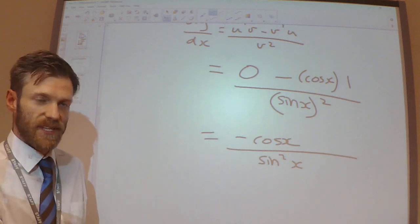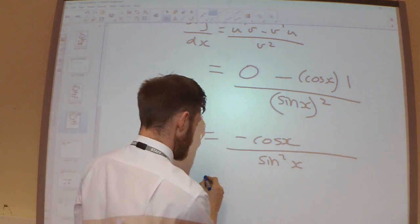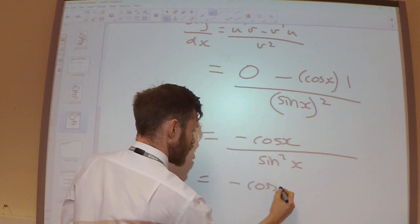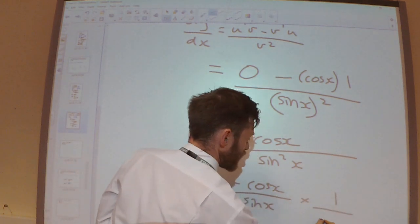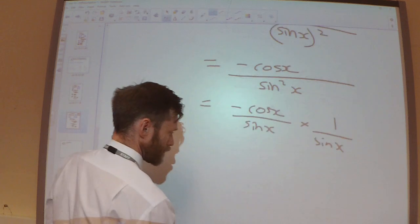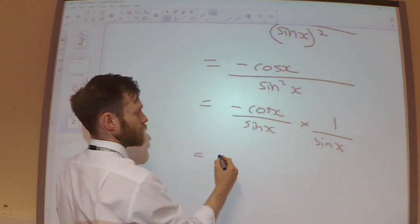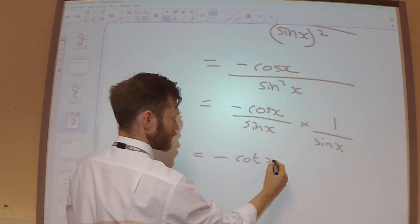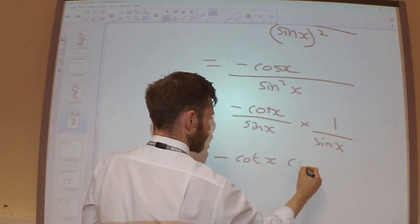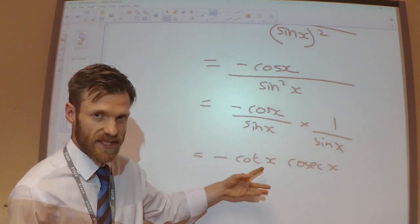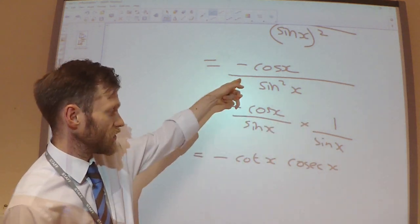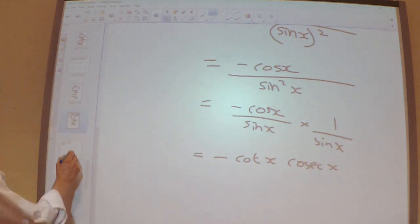And just like we did a moment ago, I could rewrite this as minus cos x over sine x multiplied by 1 over sine x, which is the same thing as minus cot times cosec x. And again, this is a bit easier to write than this.